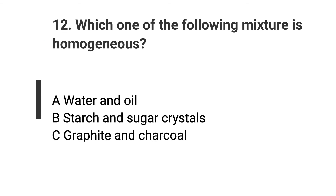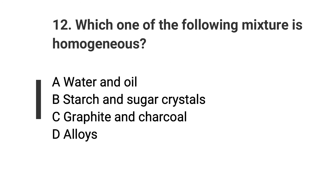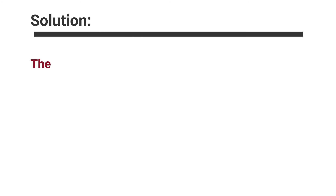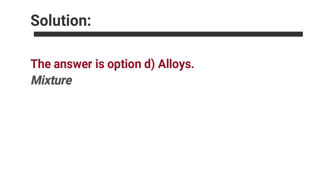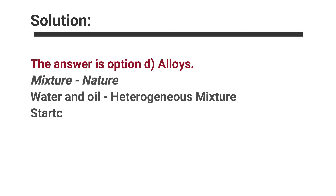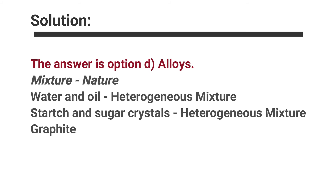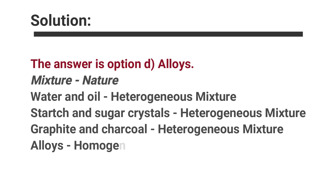Question number twelve: Which one of the following mixtures is homogeneous? Options are A. Water and oil, B. Starch and sugar crystals, C. Graphite and charcoal, D. Alloys. The answer is option D, Alloys. Water and oil, starch and sugar crystals, and graphite and charcoal are all heterogeneous mixtures. Alloys are homogeneous mixtures because by definition a homogeneous mixture has the same uniform appearance and composition throughout. Since an alloy is a mixture of two or more metals, or a metal with another element, and these mixtures are uniform throughout, they fit the definition of being homogeneous.